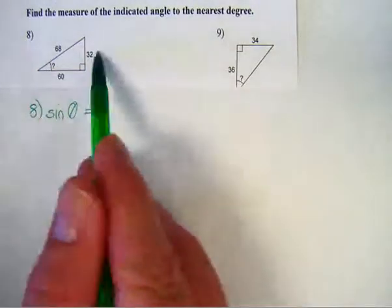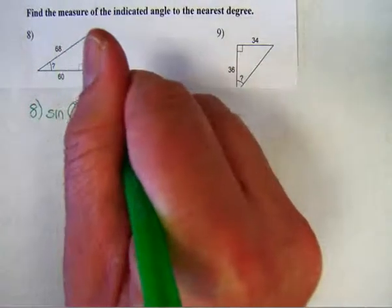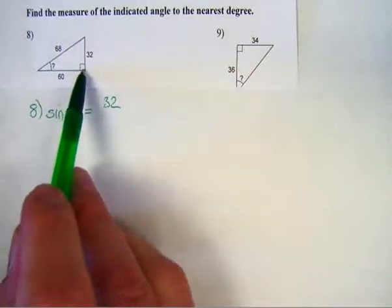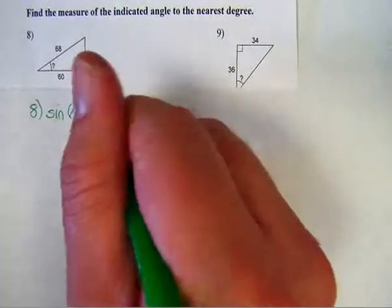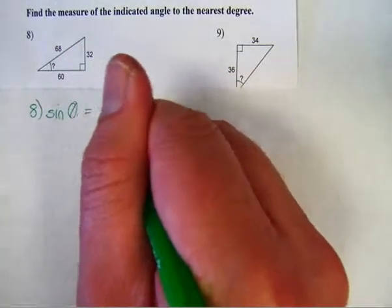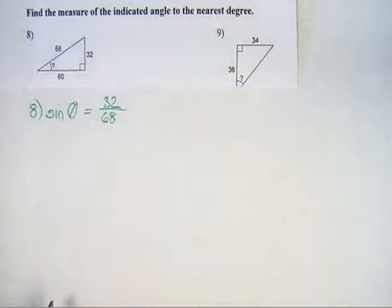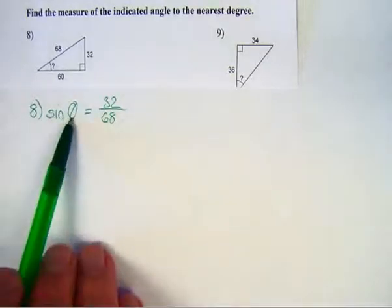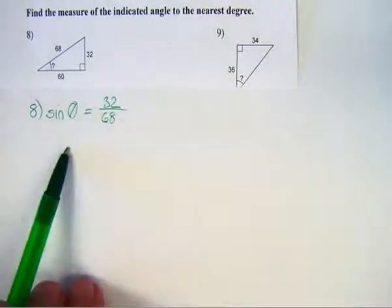So the opposite of this angle would be 32. And the hypotenuse would be opposite the right angle, which is 68. And so I have set up this, that the sine of theta is 32 over 68.